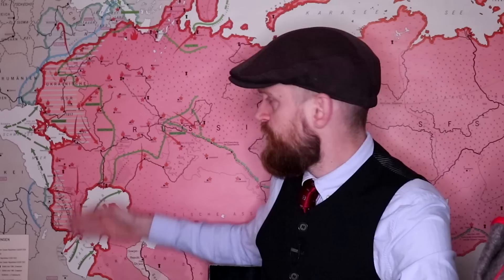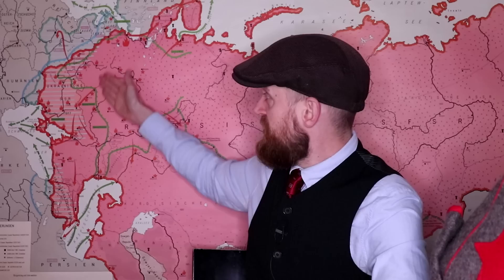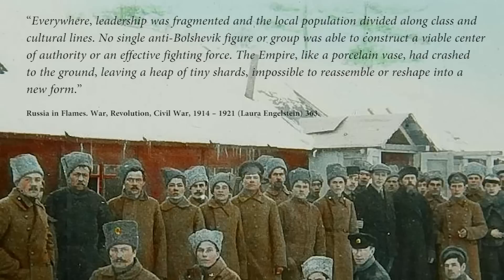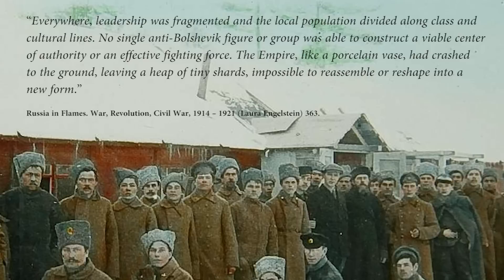Kerensky made his way out of the country and Krasnov made his way to the Don area. The Bolsheviks had control of the geographical center of Russia, and the Whites gathered in its peripheries: northwest of Petrograd, southern Russia, the Caucasus region, as well as Central Asia and the vast Siberian expanse. Everywhere leadership was fragmented and the local population divided along class and cultural lines. No single anti-Bolshevik figure or group was able to construct a viable center of authority or an effective fighting force.